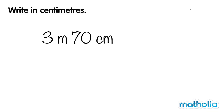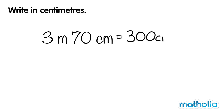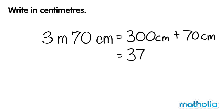Write in centimetres. Let's write 3 metres 70 centimetres in centimetres. In 3 metres there are 300 centimetres. So we can write 3 metres 70 centimetres equals 300 centimetres plus 70 centimetres. 300 plus 70 equals 370. So 3 metres 70 centimetres equals 370 centimetres.